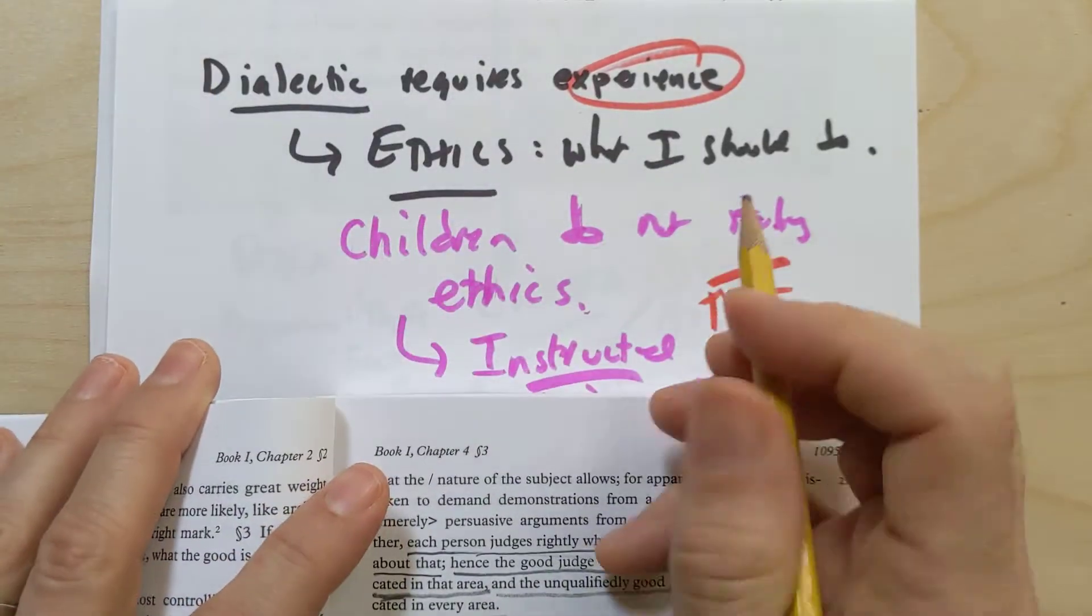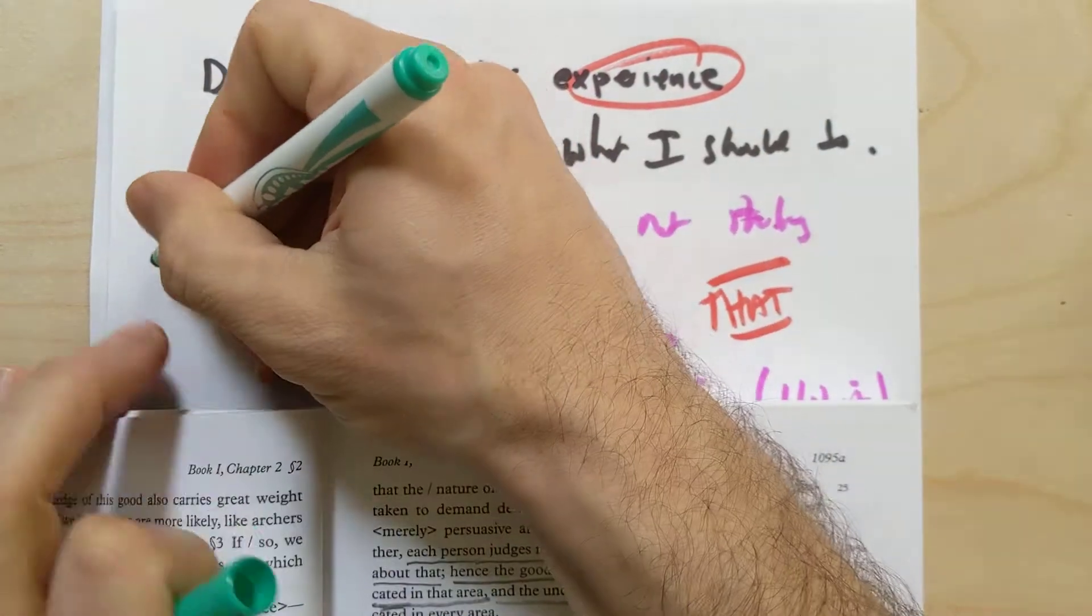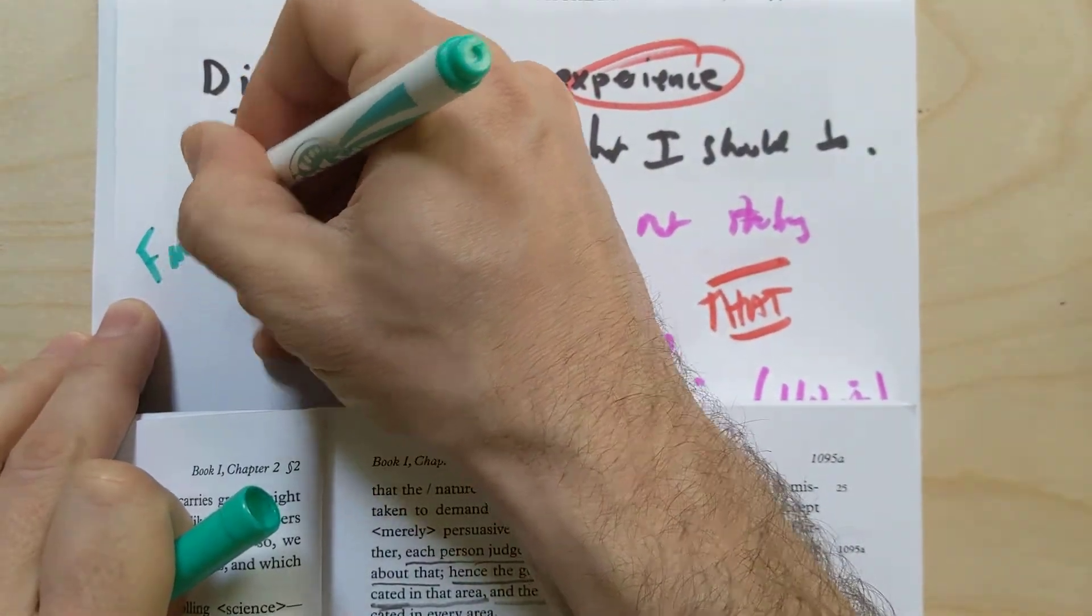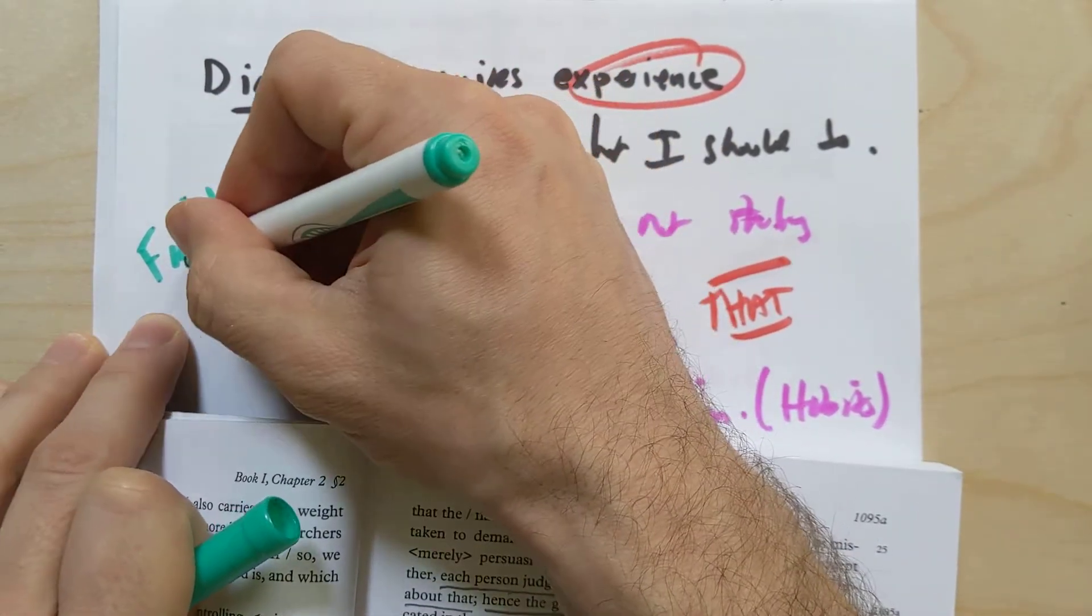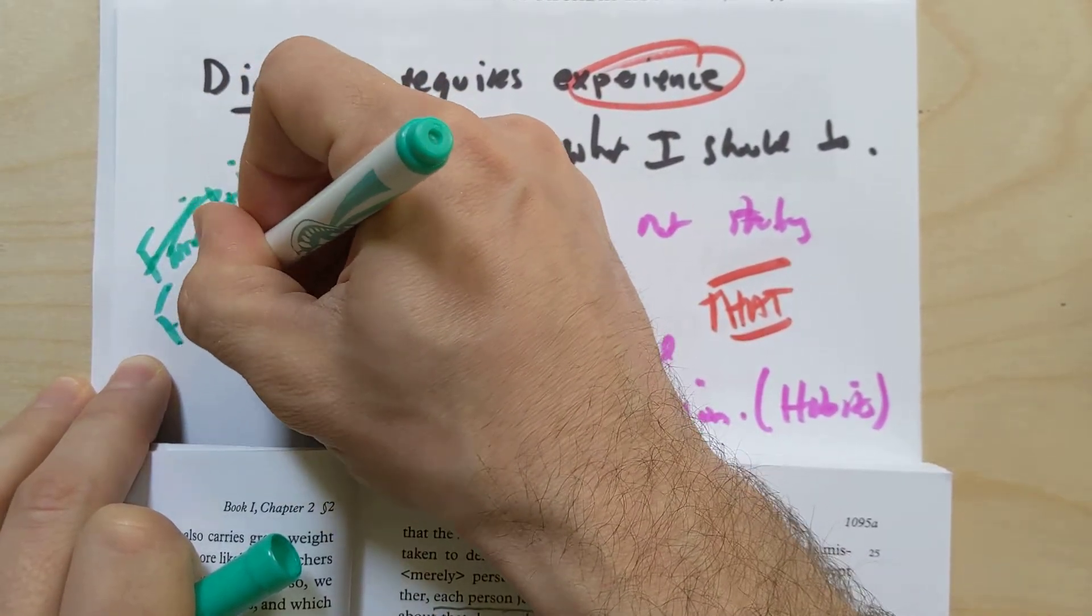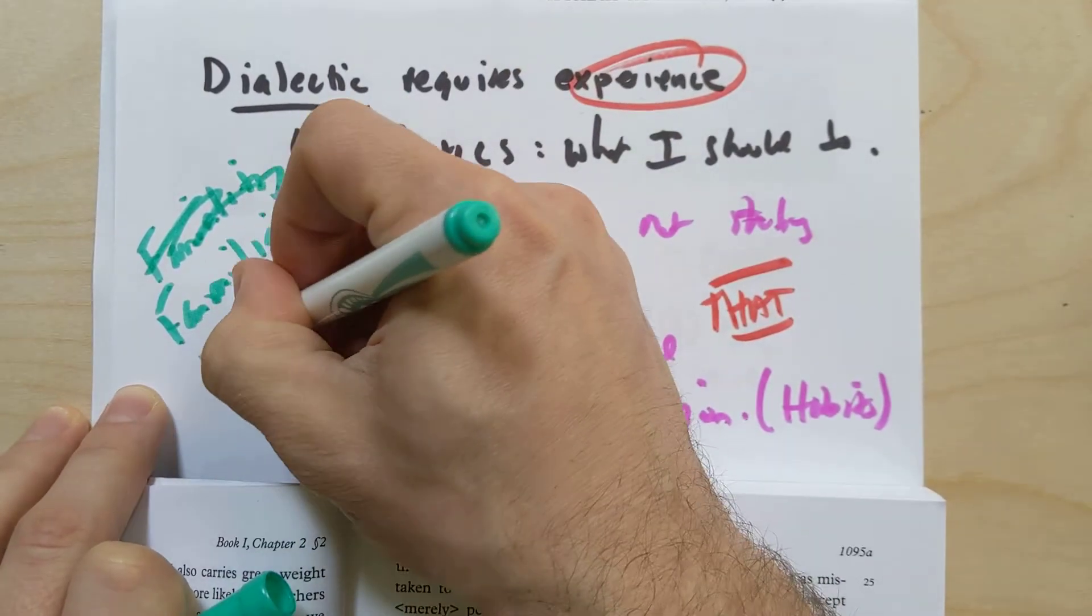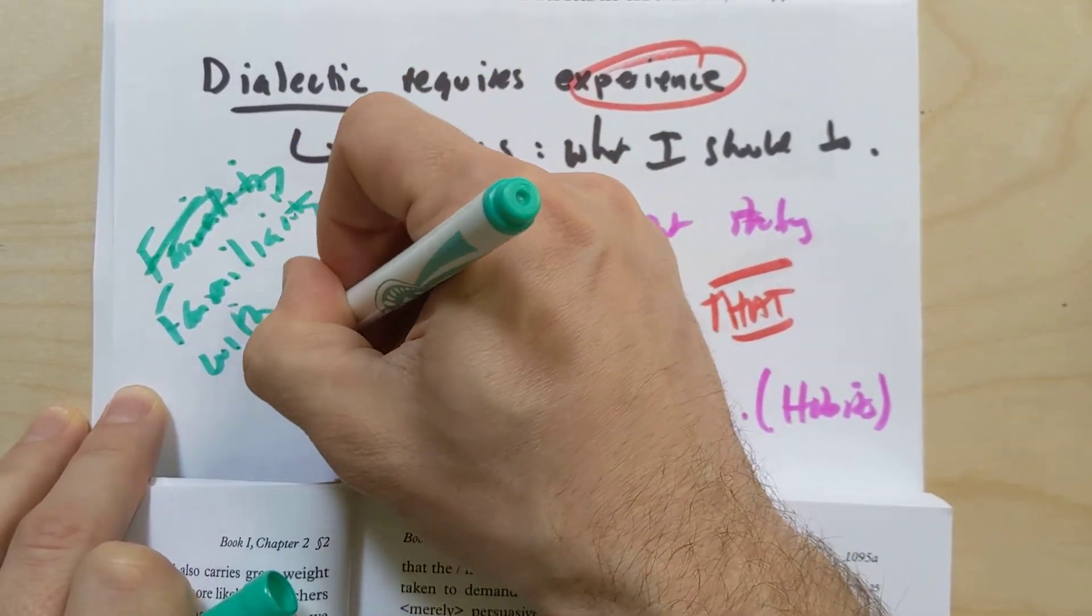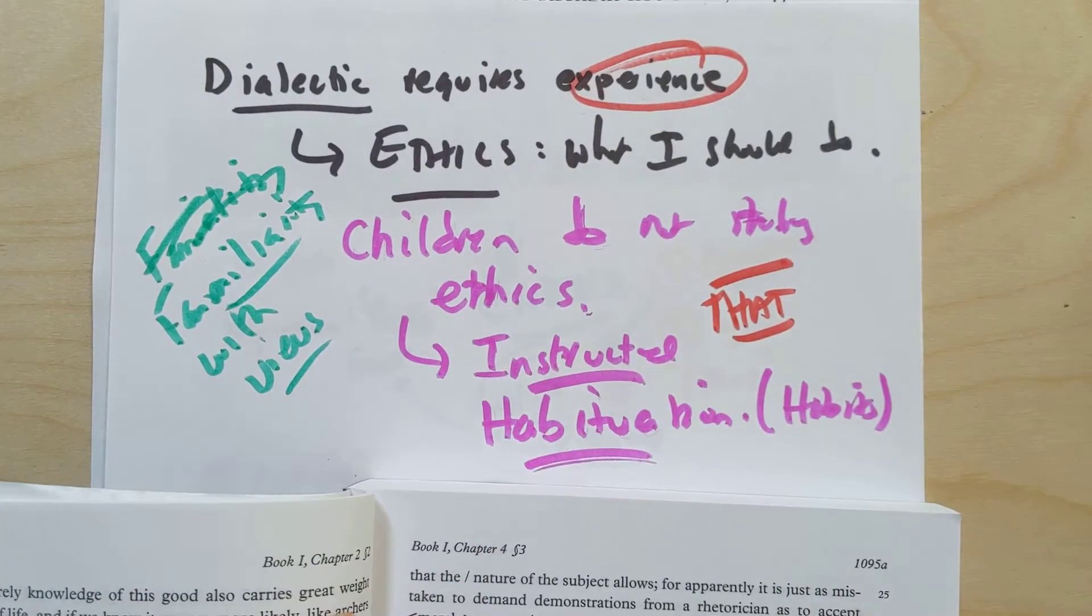You need to have some type of education. And education is ultimately, at the very least, it's a familiarity with views. At the very least, education is a familiarity with many of the different views, especially if we're going to start getting into ethics and a lot of the different choices that people make and what they do with their lives.